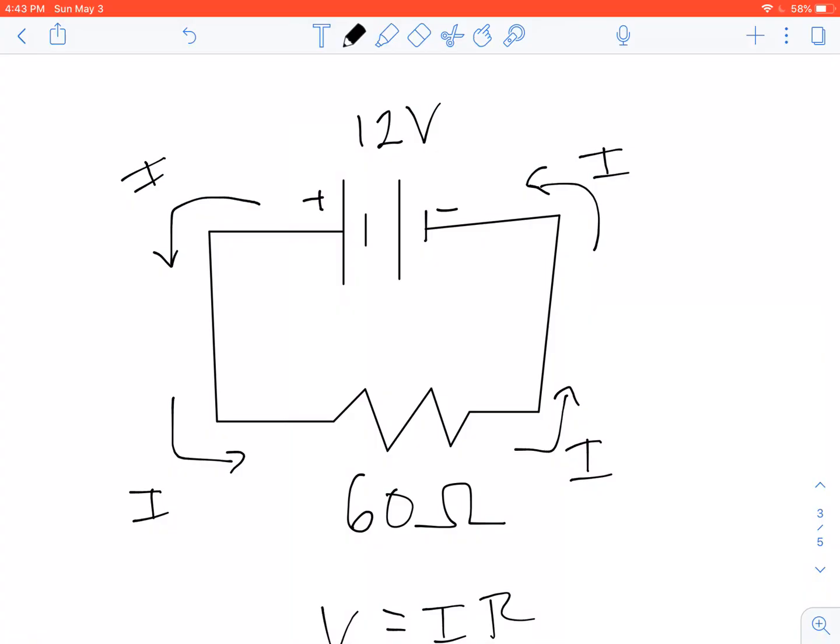This means that 0.2 amps is flowing around in this loop. 0.2 amps comes out of the battery, 0.2 amps goes around here, 0.2 amps goes through the resistor and comes out the other side, and it goes all the way back around to the negative pole of the battery.